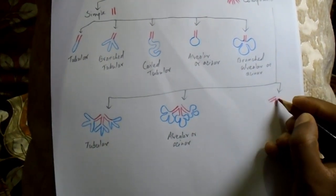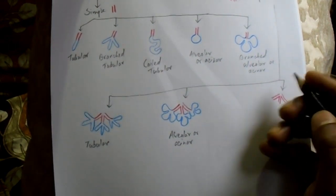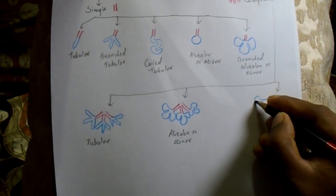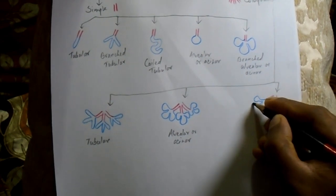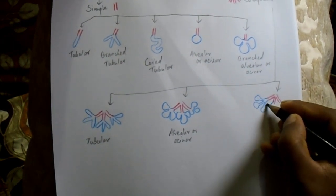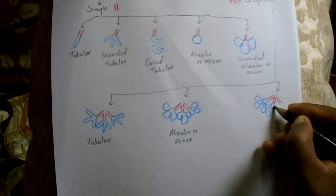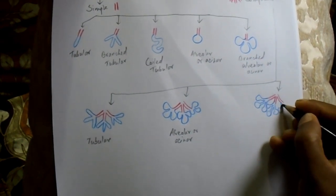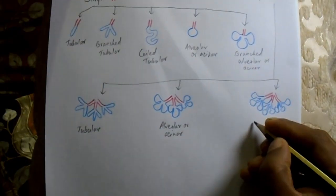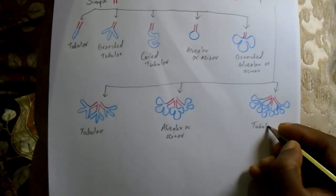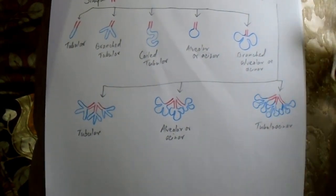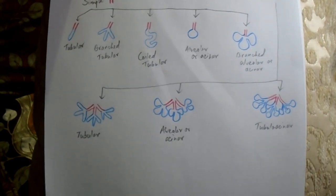In the last subtype, branching is present in the duct, and the secretory portion has some parts that are tubular and some parts that are alveolar, making it tubulo-alveolar in shape. This is termed the compound tubular acinar or compound tubular alveolar gland. This type is present in the salivary glands.